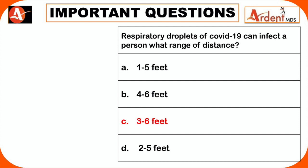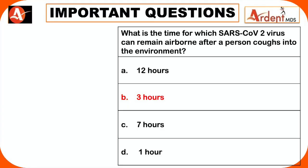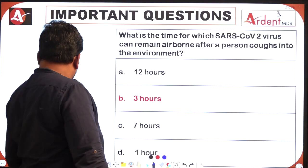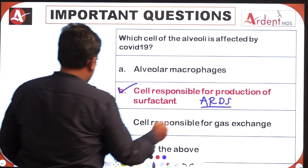COVID-19 can infect a person within a range of 3 to 6 feet — this is why we maintain social distancing of 3 to 6 feet. If a person coughs into the environment, the coronavirus can remain airborne for 3 hours. The alveolar cell affected by COVID-19 is the Type 2 pneumocyte, which is responsible for surfactant production — hence patients may develop ARDS.